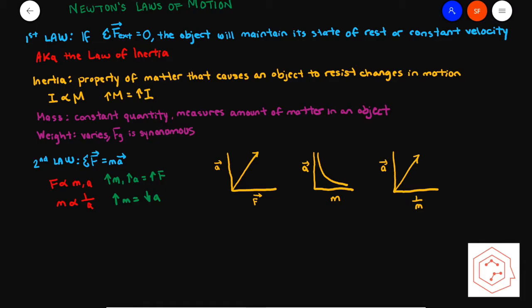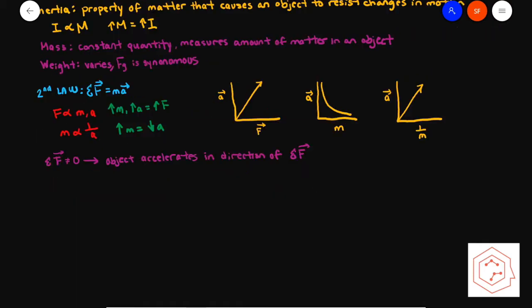Here are some quick sketches of graphs. In the first graph, F is proportional to A, so if F increases, A increases. On the other hand, mass is inversely proportional with acceleration, so if mass increases, acceleration decreases for a constant force. In the third graph, acceleration versus the inverse of mass on the x-axis gives a linear relationship. If the net force is not equal to zero, the object will accelerate in the same direction as the net force.